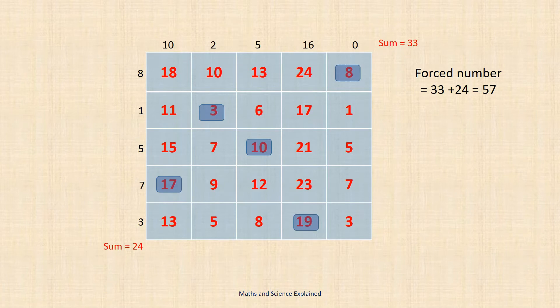The first is arranged horizontally above the table and consists of the numbers 10, 2, 5, 16 and 0. The second one is placed vertically and consists of the numbers 8, 1, 5, 7 and 3.